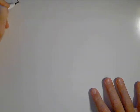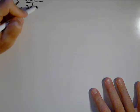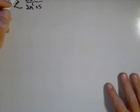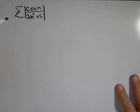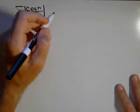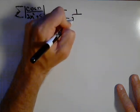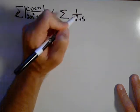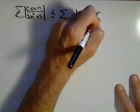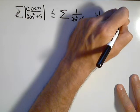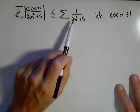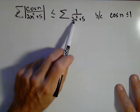The first series we're going to look at with this test is cosine(n) over (2n² + 5). What I'm going to do is take the absolute value of this, so I don't have to worry about it being negative. This series is less than or equal to 1 over (2n² + 5), because cosine(n) is less than or equal to one. So we're comparing the absolute value of our series to 1/(2n² + 5).